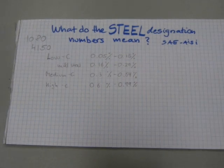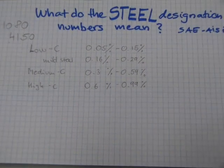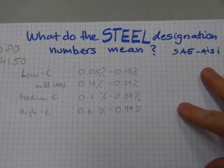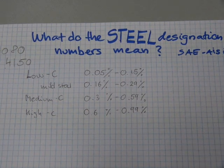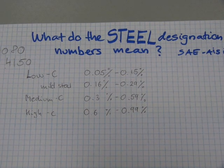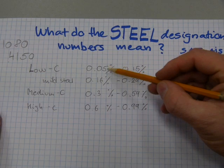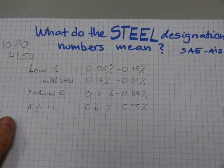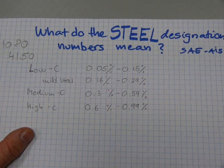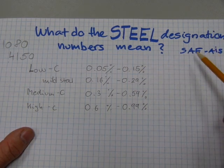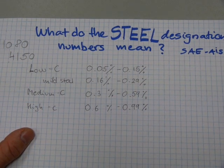As for the carbon percentages, low carbon steel contains so much carbon. This is not half a percent, this is 0.05 percent, five hundredths of a percent, and this one is fifteen hundredths of a percent.